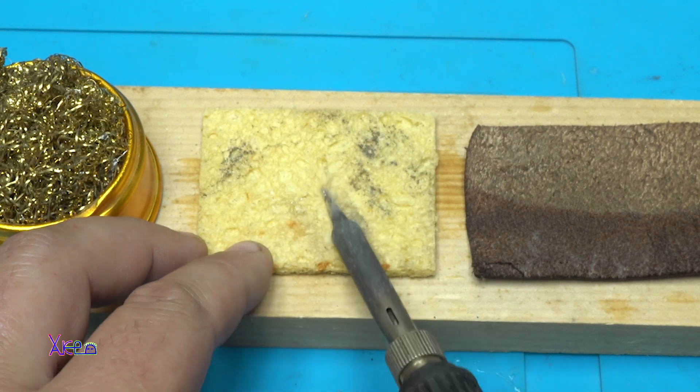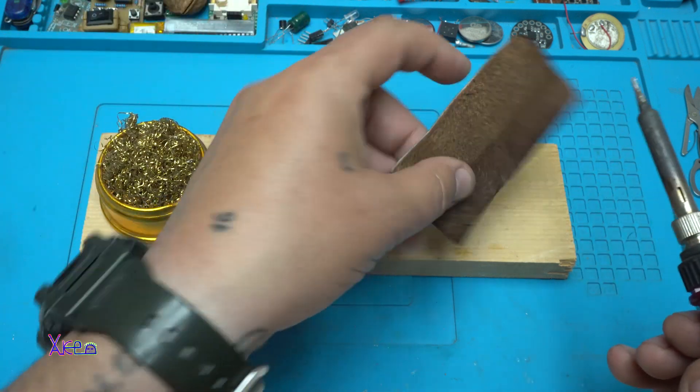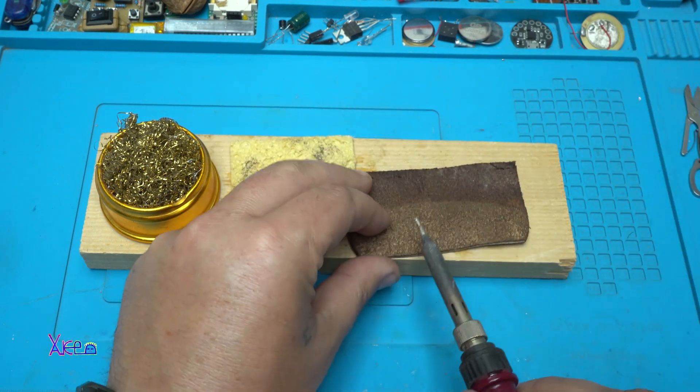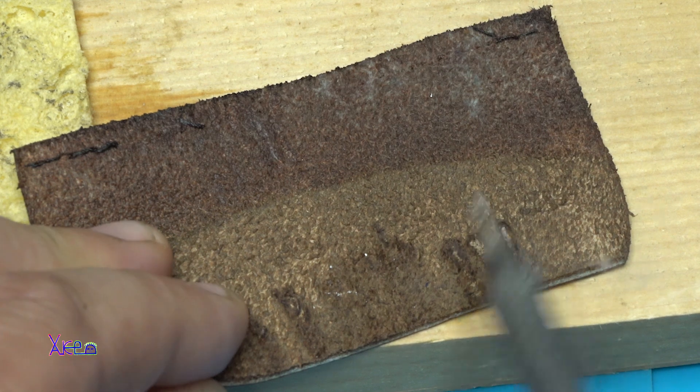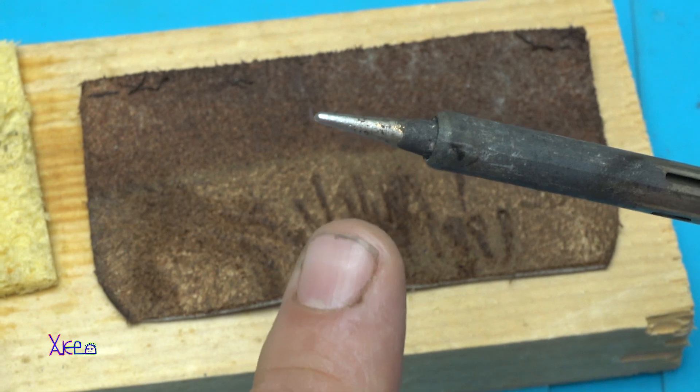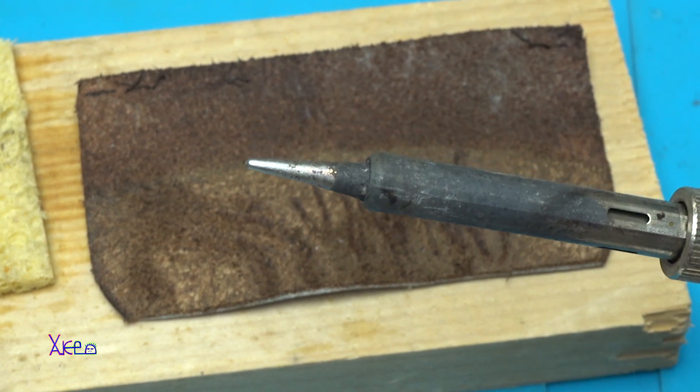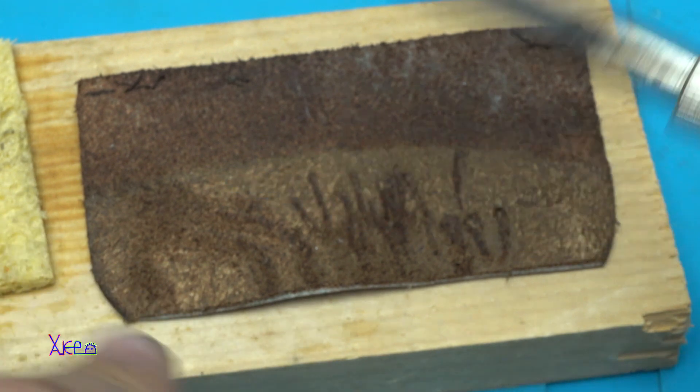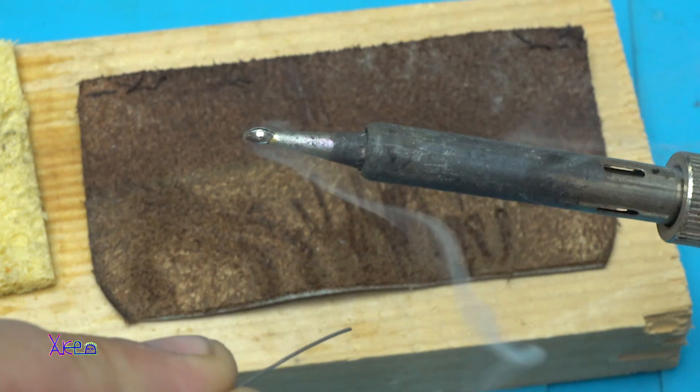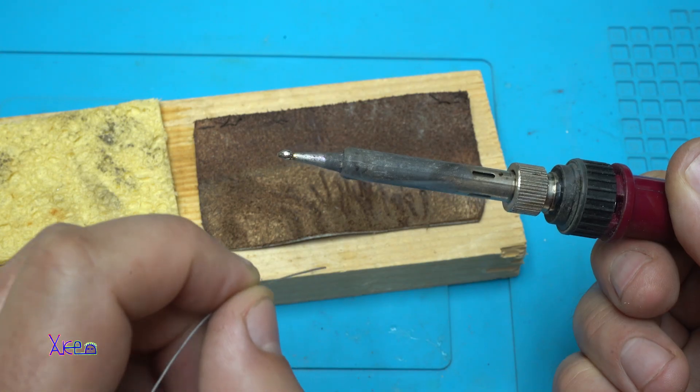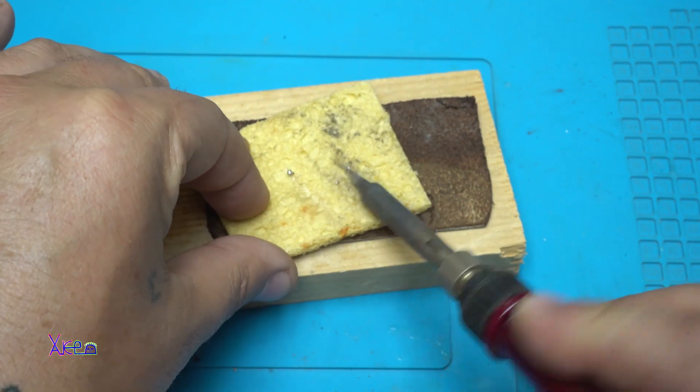And this is the first trick that I am gonna tell you. If you don't have this kind of sponge, soldering sponge for cleaning, you can use a wet leather. Take a look how much better is now the soldering tip. And when you add a soldering tin, look what happens. Very clean soldering tin that is on the soldering tip.